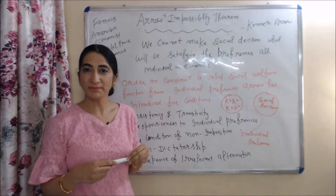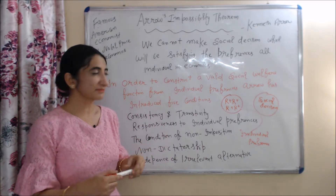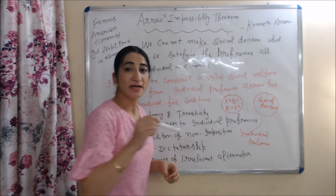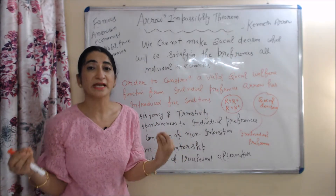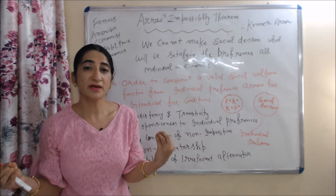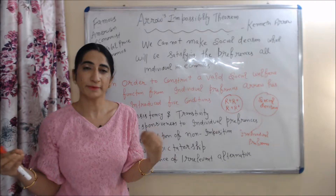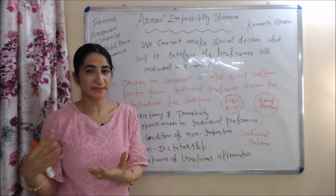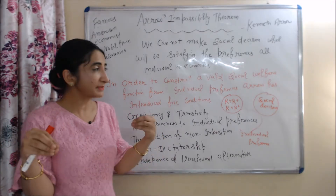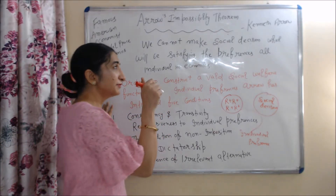The Arrow Impossibility Theorem is given by Kenneth Arrow. Kenneth Arrow was a famous American economist who received a Nobel Prize in economics.